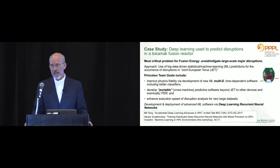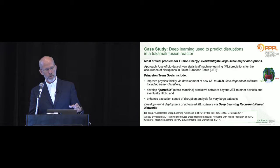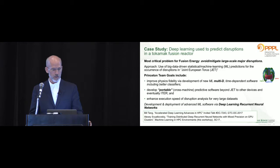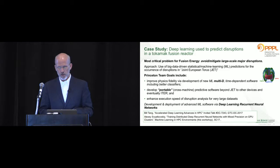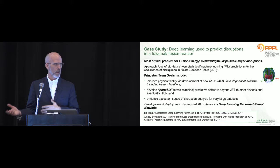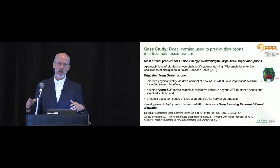JET is the largest tokamak on our planet, with a lot of data on disruptions over about a decade-long period. After getting access to this data, the Princeton team's goals include improving the physics fidelity of their multidimensional time-dependent software to include better classifiers. The challenge is stiff because in order to ameliorate a disruption, they need to respond within about 50 microseconds. They also aim to develop portable cross-machine prediction software beyond JET to other devices and eventually ITER.